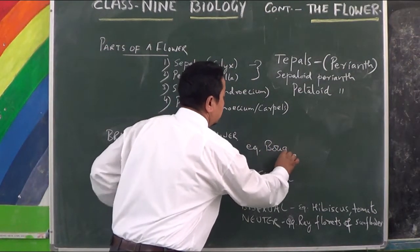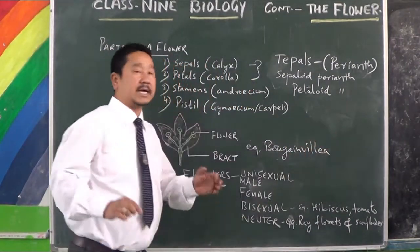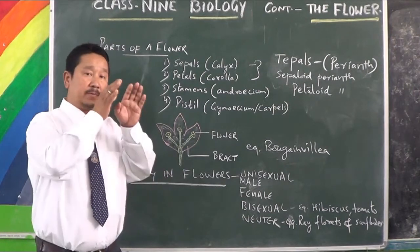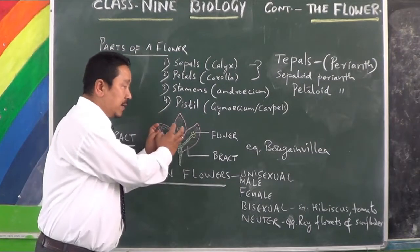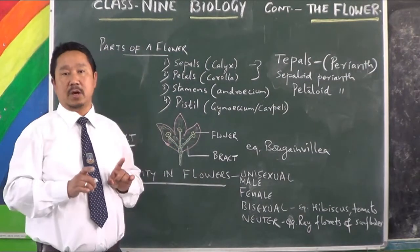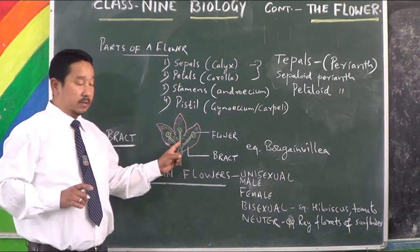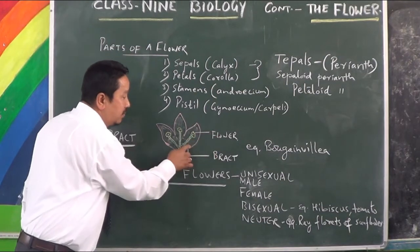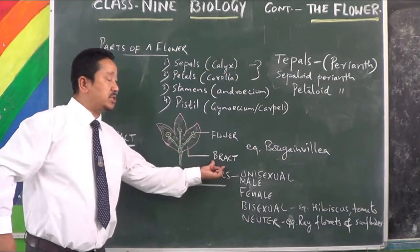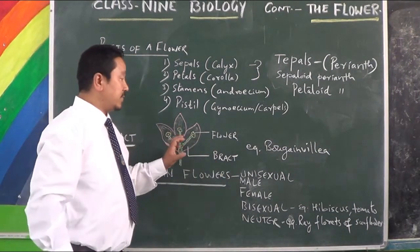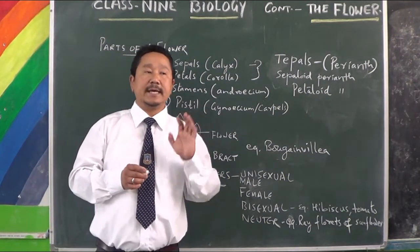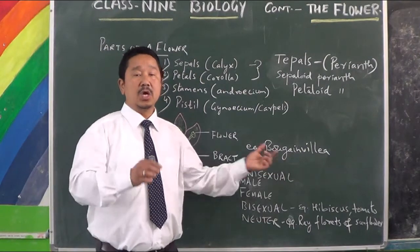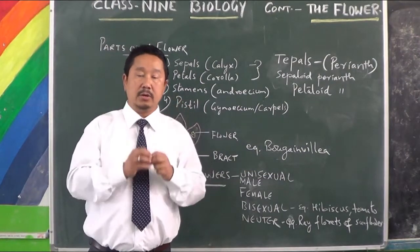In Bougainvillea, you can see the bract clearly. Sometimes you get confused with the flower of Bougainvillea — the brighter part which you see appears to be the flower, but actually it is not. The actual flower is there in the middle, originating from the axil of the leaf-like structure. The bright leaf-like part which you see is your bract.